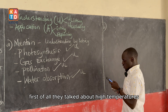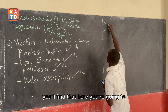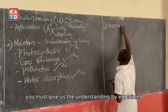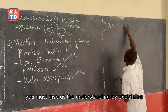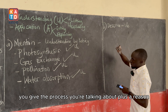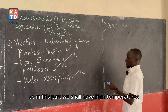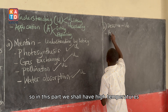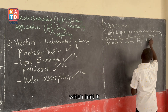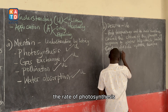First of all, they talked about high temperatures and too much sunshine. This question involves describing, so you must give understanding by explaining — you give the process or structure plus a reason. High temperatures and too much sunshine caused water loss, which limited carbon dioxide uptake, reducing the rate of photosynthesis.